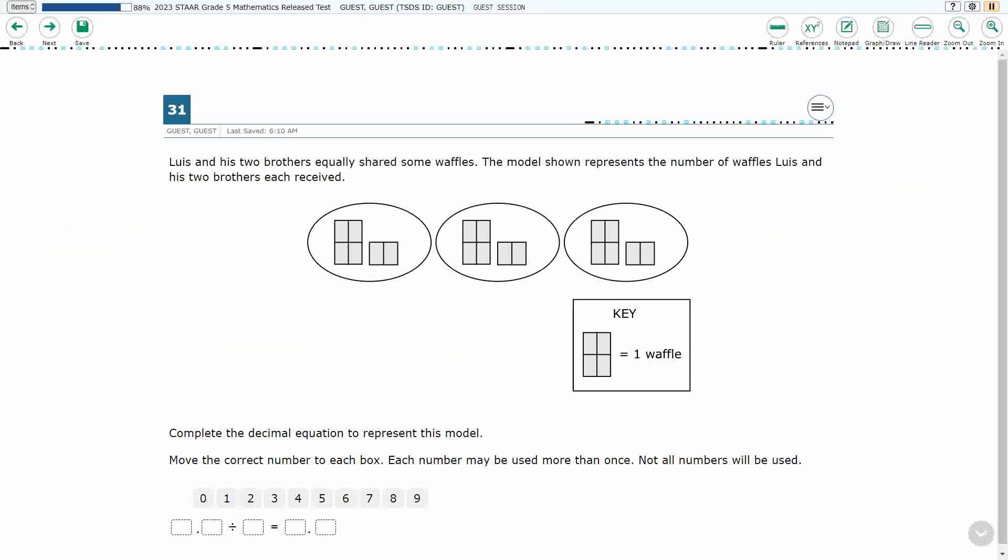All right, now we just have to put that together correctly. 4.5 or 4 and 5 tenths, remember that's the total, divided into three equal groups, gets me 1.5 or 1 and 5 tenths into each group. This is how you get full credit on this problem.